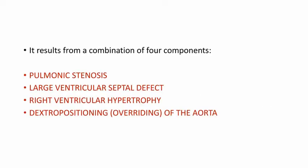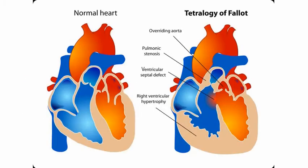So what is Tetralogy of Fallot? It is a combination of four components: pulmonic stenosis, large ventricular septal defect, right ventricular hypertrophy, and overriding aorta. Let's see the difference between a normal heart and a heart with Tetralogy of Fallot. Here you can see a defect in the ventricular septum, right ventricular hypertrophy, pulmonic stenosis, and overriding aorta.